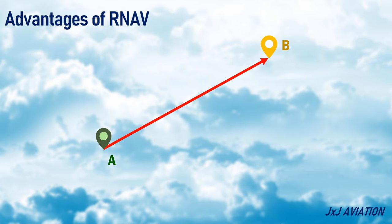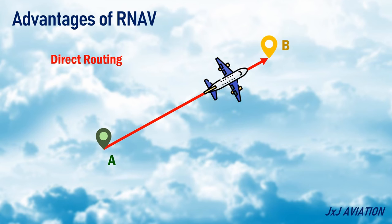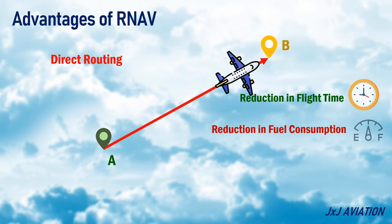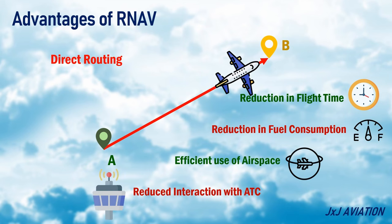The advantages of RNAV. The biggest advantage of RNAV is that it allows a direct routing from A to B. This means reduction in flight time, reduction in fuel consumption, more efficient use of airspace, and reduced interaction with ATC.